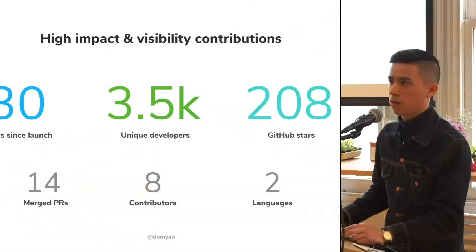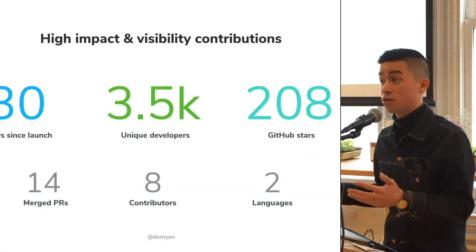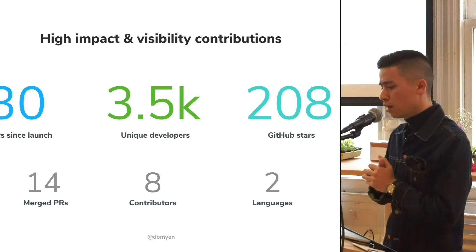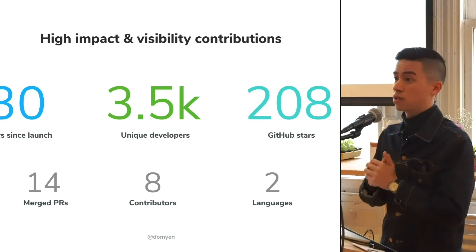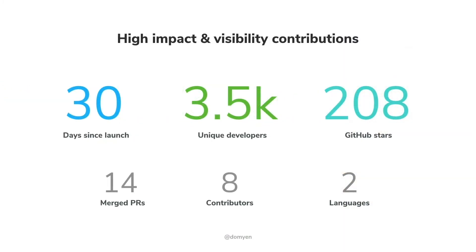Since launch about 30 days ago, we had an enormous reception from the React community: 3,500 unique developers, 208 GitHub stars, 14 merged pull requests, 8 contributors, and two languages now. I started this project with one of my colleagues, Tom Coleman, and we were quickly joined by a lot of contributors who all share the same goal — promoting this idea of componentized development to the world.